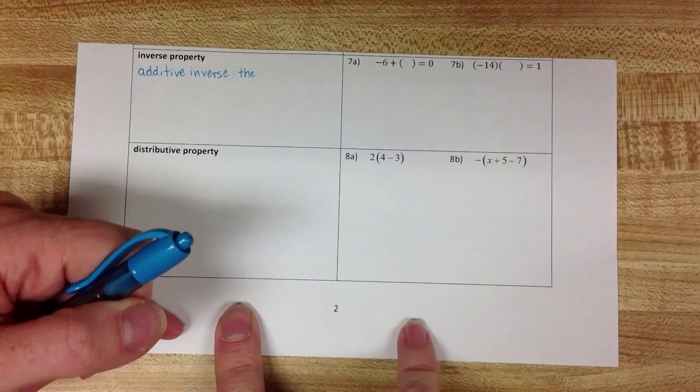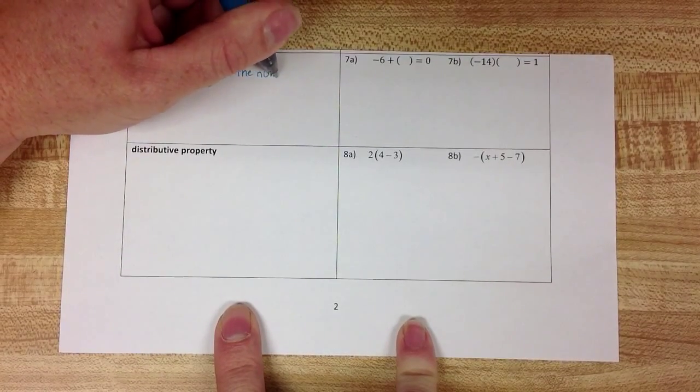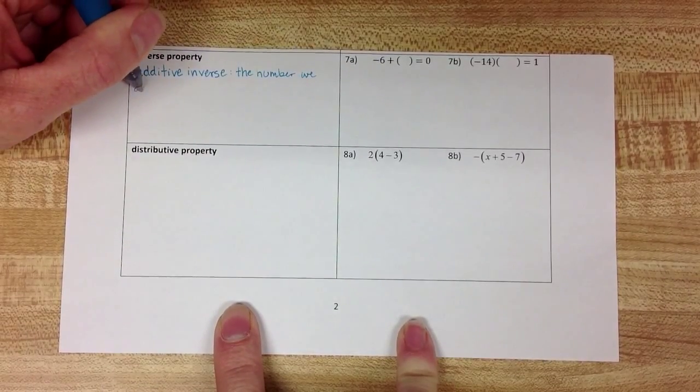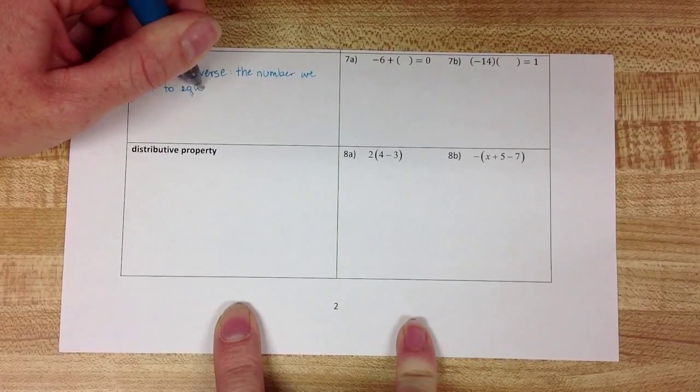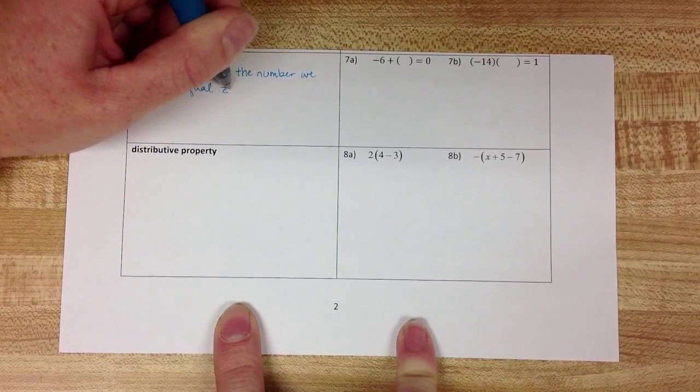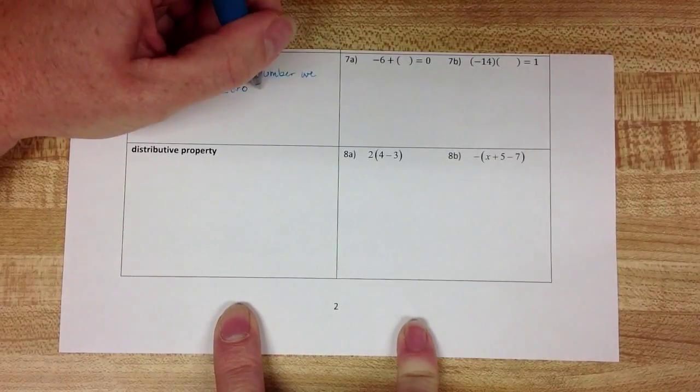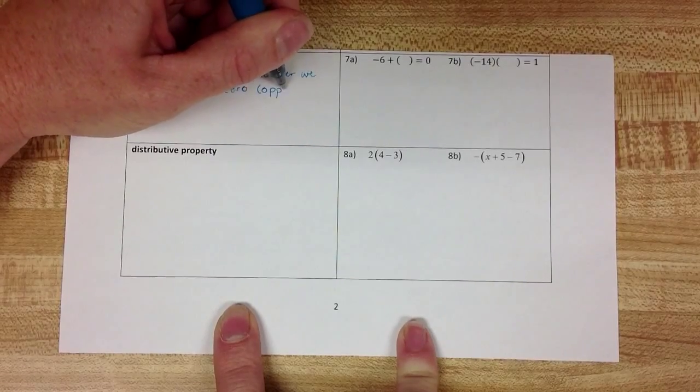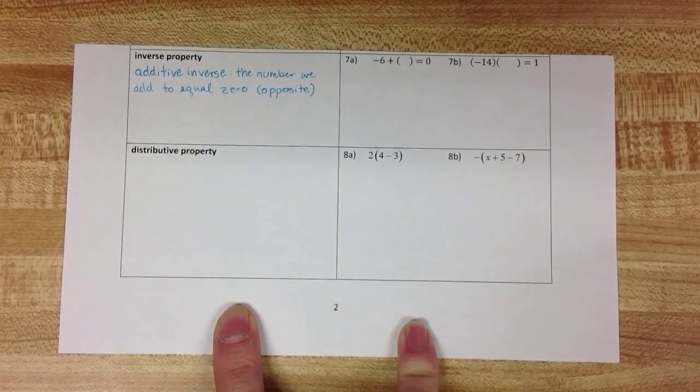The additive inverse is the number we add to equal 0. So when we were looking at integer operations, we referred to this as the opposite of a number.